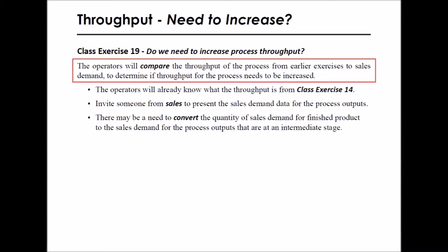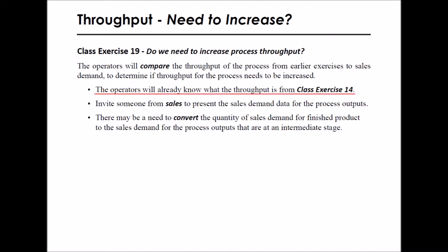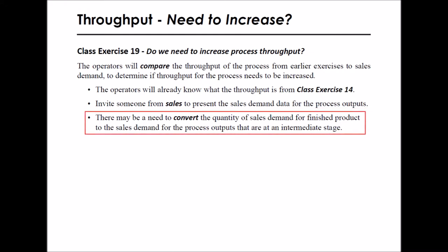In Class Exercise 19, the operators will compare the throughput of the process from earlier exercises to sales demand, to determine if throughput for the process needs to be increased. The operators will already know what the throughput is from Class Exercise 14. Invite someone from sales to present the sales demand data for the process outputs. There may be a need to convert the amount of sales demand for finished product to the sales demand for the process outputs that are at an intermediate stage.